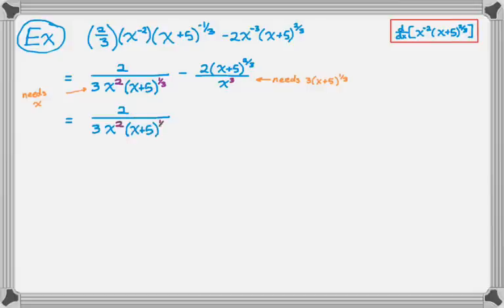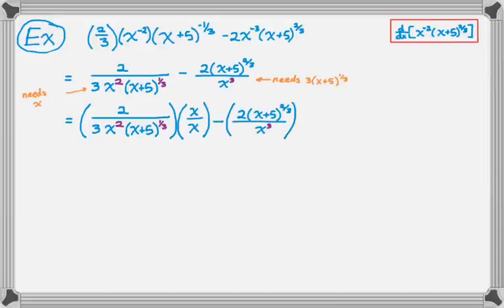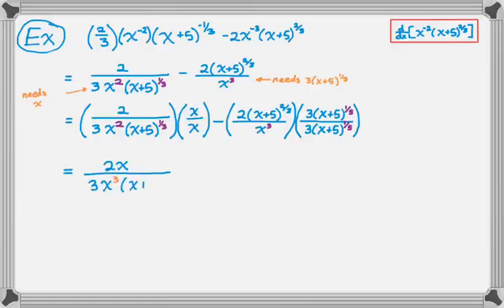So we get this expression, and I multiply the whole first fraction by x over x, and then minus the second quantity, multiplied by 3 times the quantity x plus 5 to the 1/3, top and bottom. On the left side, that's 2x over the common denominator, becoming 3x cubed times the quantity x plus 5 to the 1/3. Then minus: 2 times 3 is 6, and the quantity x plus 5 to the 2/3 times x plus 5 to the 1/3 — since 2/3 plus 1/3 is 1 — is just x plus 5, all over the common denominator.